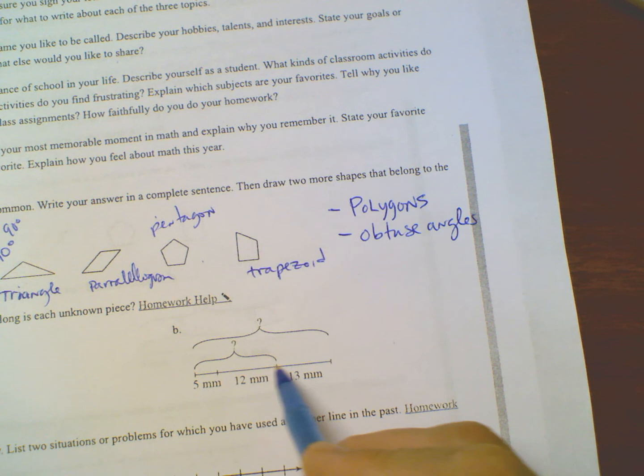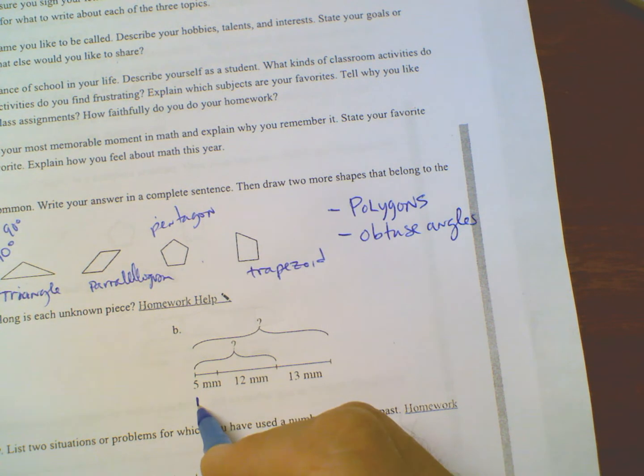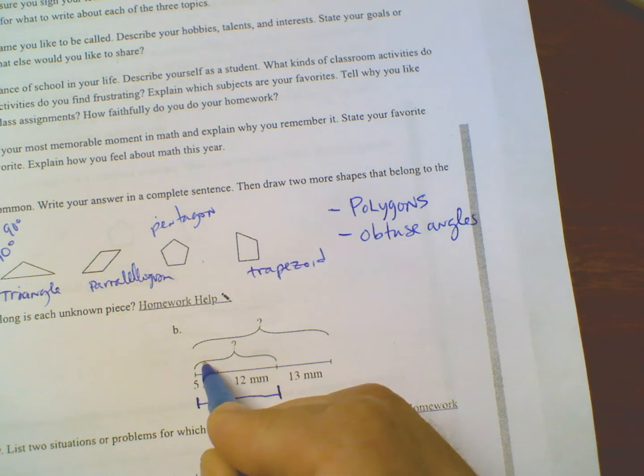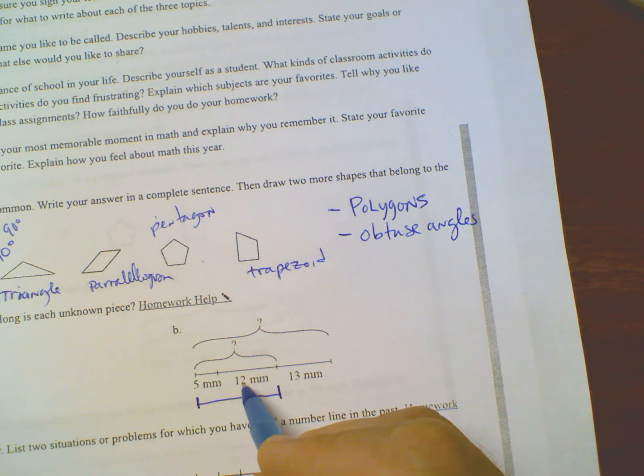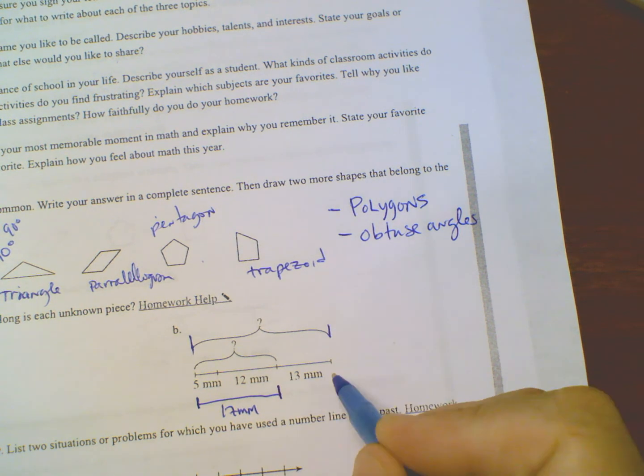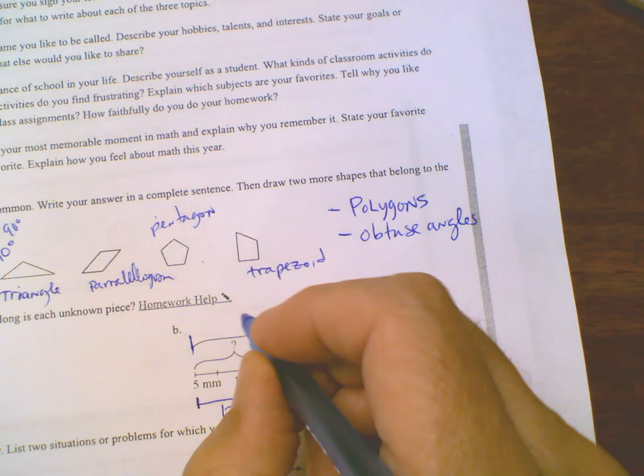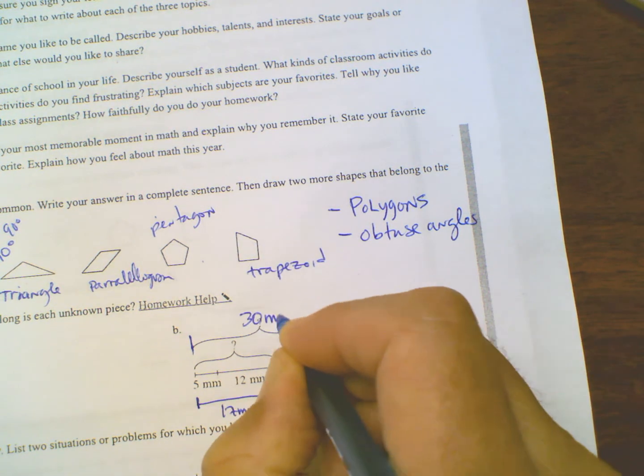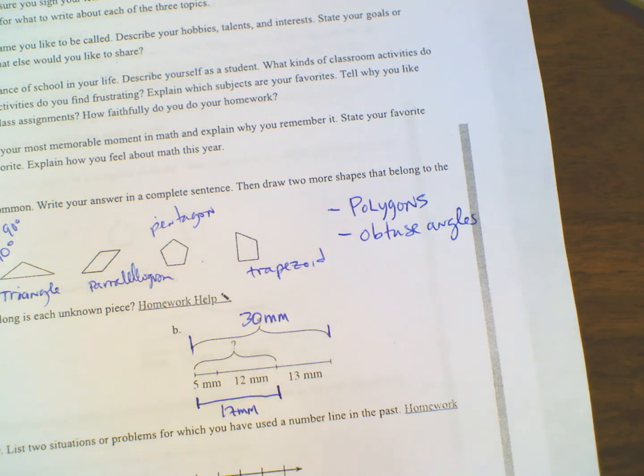Over here, this one they actually give us the whole thing but they're telling us in little chunks. So from there to there, that piece - what they want to know is 5 plus 12. So that's 17 millimeters. And then the entire thing, from here to here all the way across, would be 17 plus 13, which would be 30 millimeters.